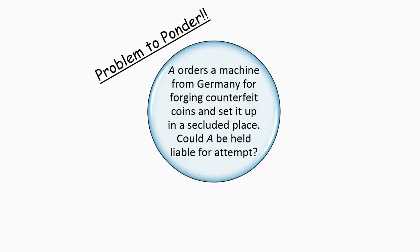And now to this week's problem to ponder: A orders a machine from Germany for forging counterfeit coins and sets it up in a secluded place. Could A be held liable for attempt? Please post your answers in the comment box along with your feedback and suggestions. Till we meet next, bye!